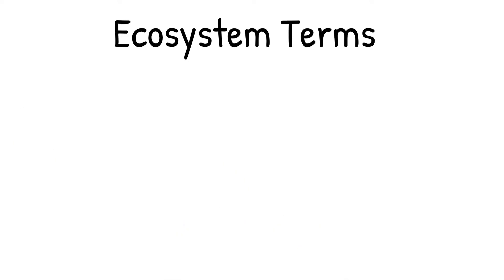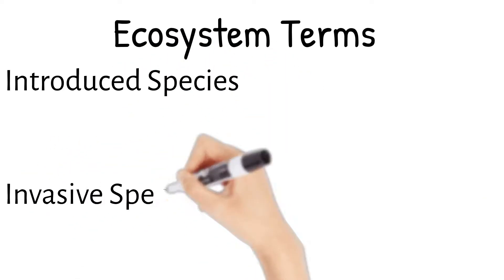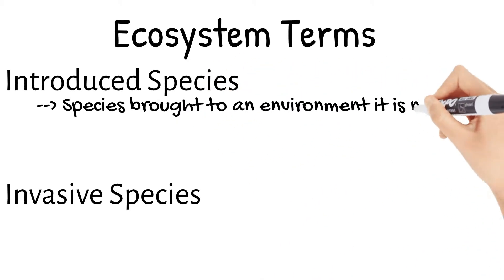The next two terms, introduced species and invasive species, were actually also part of this example. An introduced species is one that is brought to an environment it is not naturally found in, whether by accident or on purpose.